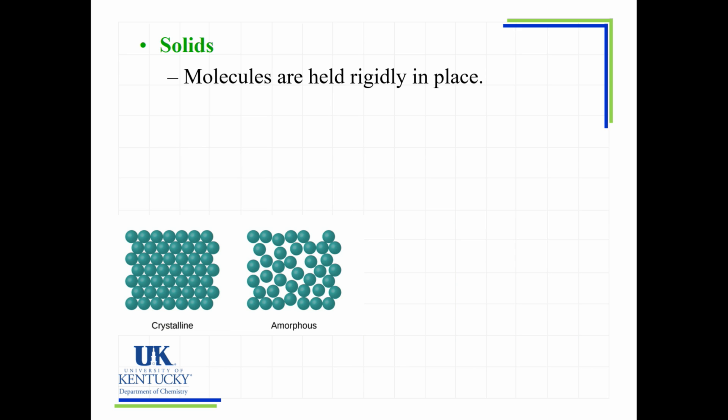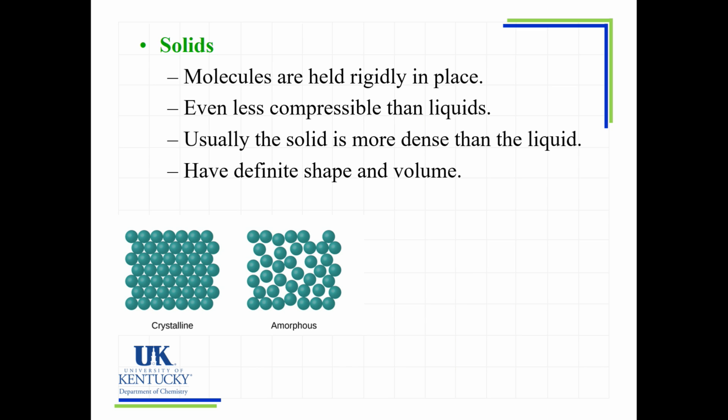Now a little bit about solids. They're rigidly held in place. They might be rigidly held in place in a very organized way or a disorganized way, but their neighbors stay their neighbors. They're even less compressible than liquids, meaning you can't push them any closer together. You start smashing on them, they just change shapes if they can. Usually, like I said in the first slide, usually the solid is more dense than the liquid. They get compacted even more tightly together, and this makes them more dense because they're packed more tightly together. And what we learned way back in Chapter 1 is that they have a definite shape and a definite volume.